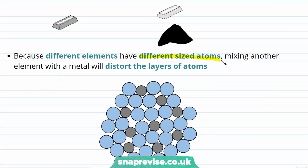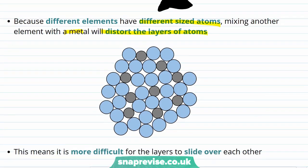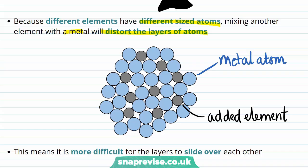This is because different elements have different sized atoms. And therefore adding another element to a metal will distort the layers of atoms that are formed in metallic bonding. We can see this in this diagram where the metal atoms have been shown in blue. And the atoms of the added element have been shown in black. You can see that the metallic structure is no longer arranged in those clean layers that we have seen previously.